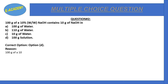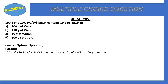100 grams of 10% weight by weight NaOH solution contains 10 grams of NaOH in 100 grams of solution. This means 10 grams of NaOH is present per 100 grams of solution. Out of the 100 grams of solution, 10 grams is NaOH and the remaining 90 grams is water.